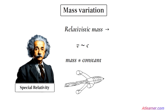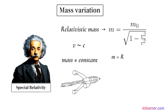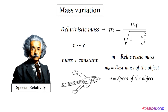This mass variation in relative motion can be measured using this formula: M equals M₀ divided by the square root of 1 minus V squared divided by C squared, where M is the relativistic mass, M₀ is the rest mass of the object, V is its speed, and C is the speed of light in the vacuum.